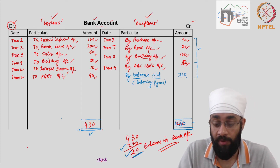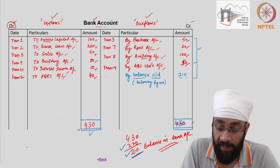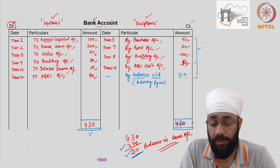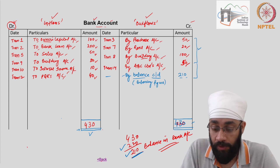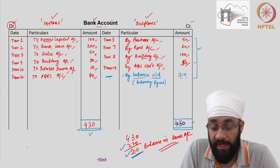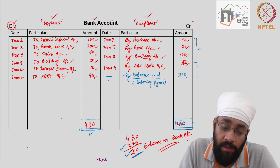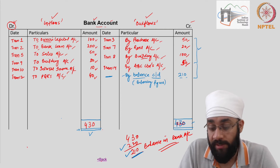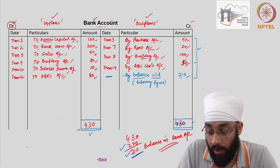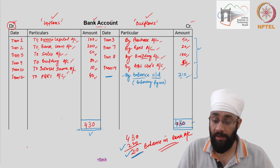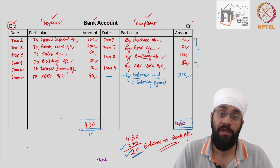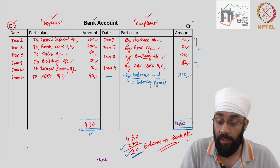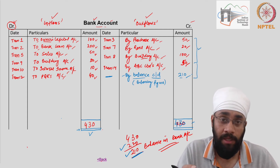You put a date here — since these were transactions we don't have a transaction number for this, and this is not necessarily a transaction. So you just put the last date of the financial year or the month whenever you are closing this account, and you write 210. This is the balance in the bank account — this is the formal process of closing an account and figuring out what balance is left.